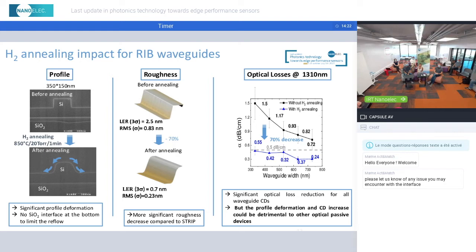Regarding the roughness, you can observe that this significant reflow is also accompanied by a significant roughness decrease, much more pronounced than in the case of the strip. The consequence is that we can achieve a decrease of about 70% in optical loss for all the waveguide CDs that we have on our wafer, reaching 0.5 dB per centimeter.